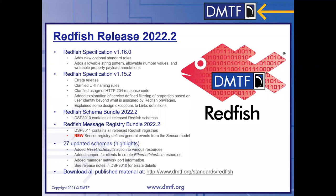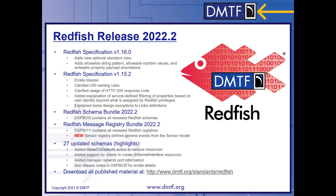Most of the action, as usual, happens in the Redfish schema bundles. DSP-8010, the Redfish schema bundle, had 27 updated schemas with many minor revisions that added functionality. The other deliverable was the message registry bundle — there was a new registry for events related to sensors or the Redfish sensor model, with generic messages for threshold crossings, both violating thresholds and returning to normal, giving a whole pattern for reporting sensor-based state changes.